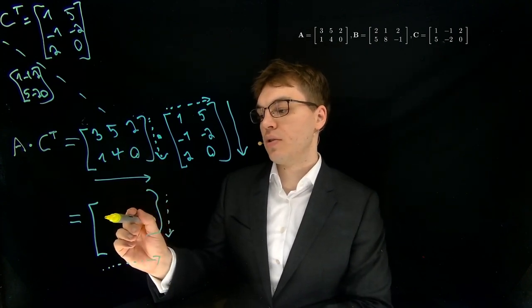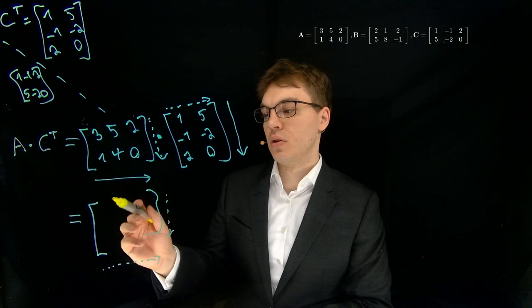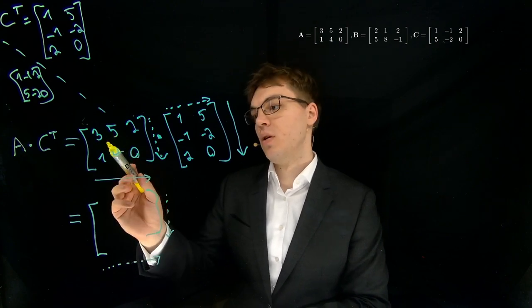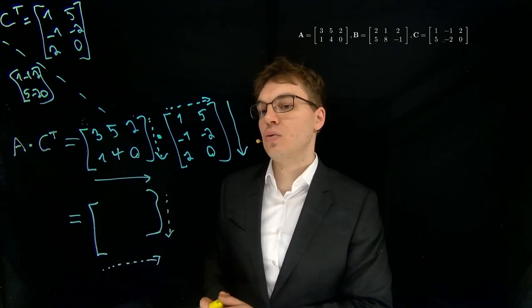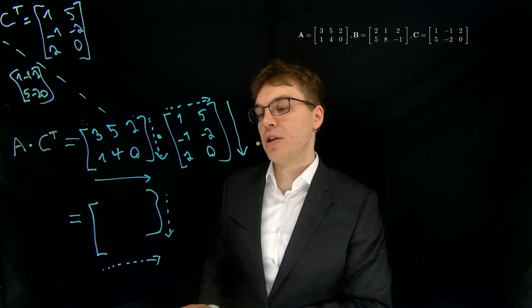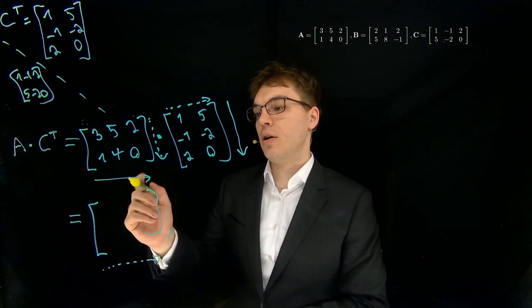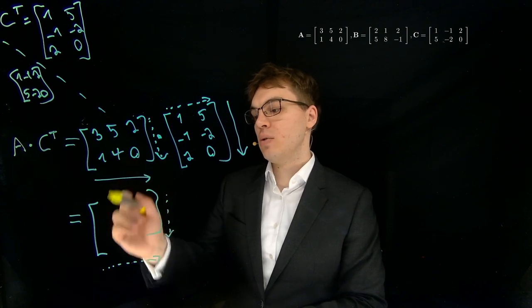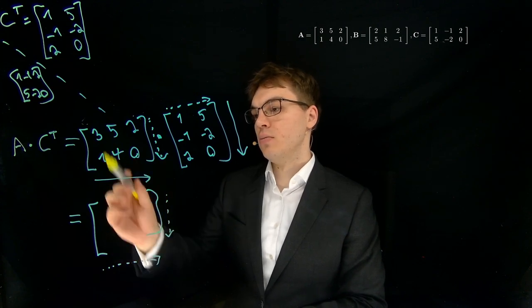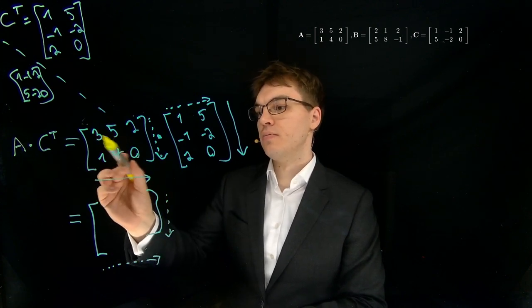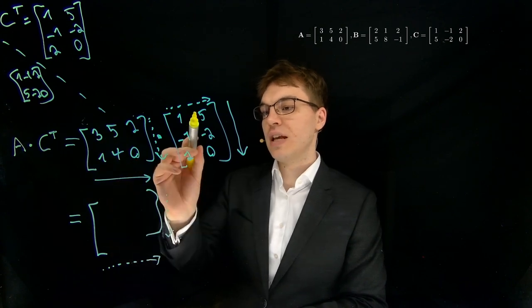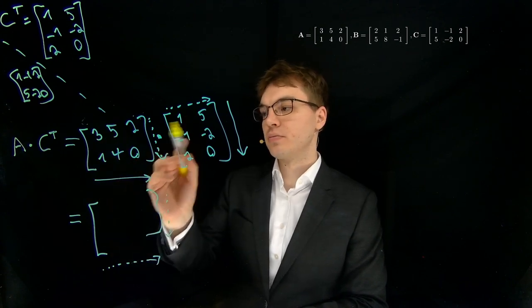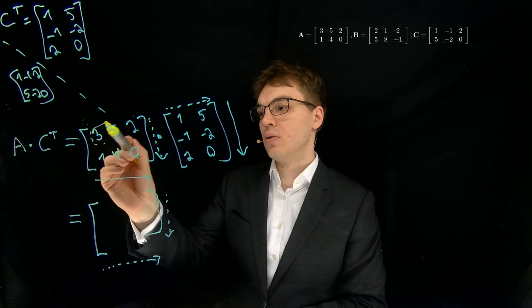So in order to compute the first element on the top left, we actually need to do multiple multiplications and compute the sum of these products. So what we do, first row, we select the first row here, and first column, we select the first column here.